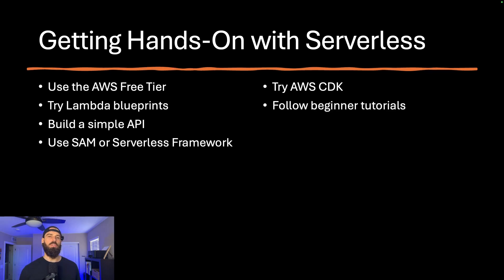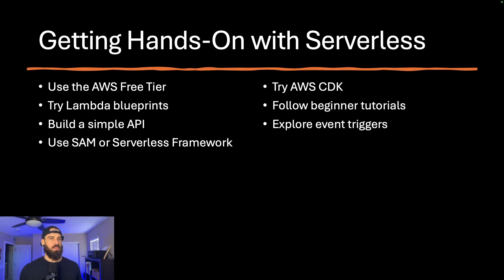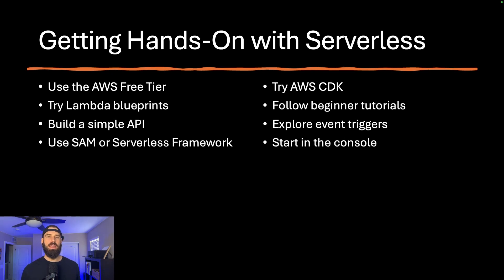There are fantastic tutorials available from AWS, freeCodeCamp, YouTube, and even my own channel. These walk you through building real-world use case applications using serverless components. Try exploring event triggers — connect a Lambda function to an S3 bucket that runs every time a file is uploaded, or set up an EventBridge rule that runs a function on a set schedule every hour. These event-driven patterns will be the core of most serverless applications. If you don't want to feel pressure to automate everything immediately, just start in the console — manually setting up an API Gateway or Lambda function helps you understand what's going on under the hood.